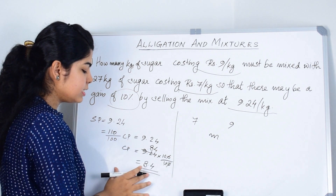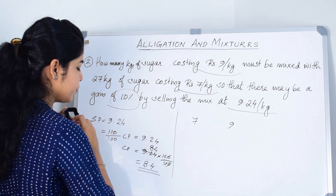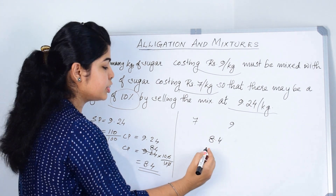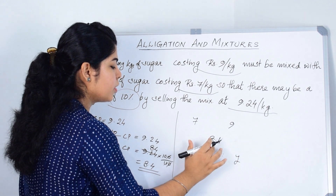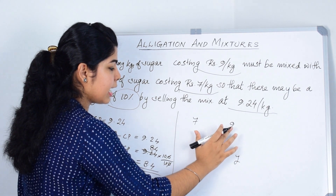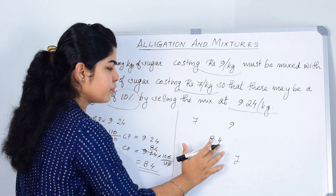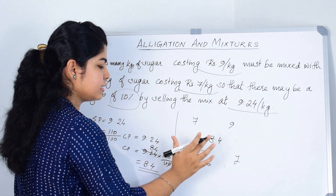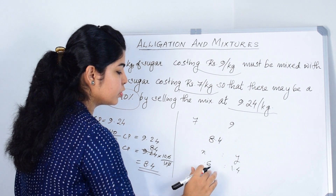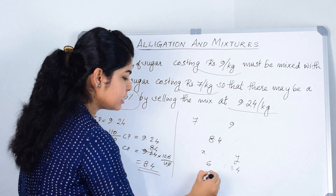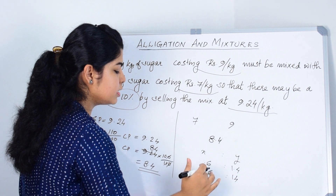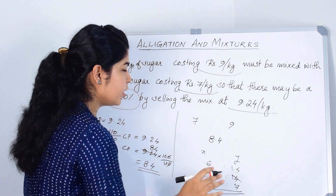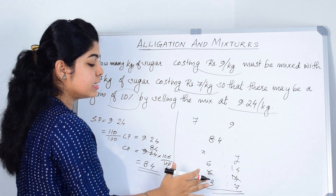We substitute the mean price with 8.4. By rule of allegation, to find ratio X is to Y: X equals 9 minus 8.4, which is 0.6; Y equals 8.4 minus 7, which is 1.4. Multiplying both sides by 10 gives 6 and 14. Dividing both by 2 gives 3 and 7. So the ratio in which both varieties of sugar should be mixed is 3 is to 7.